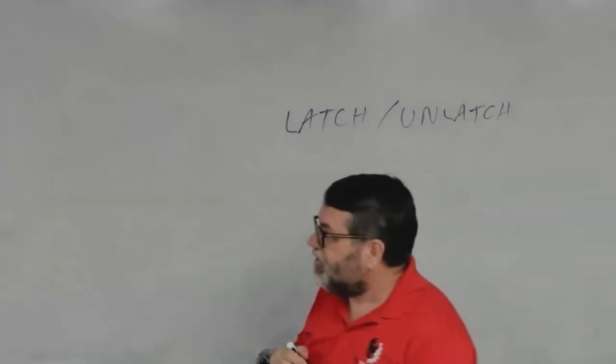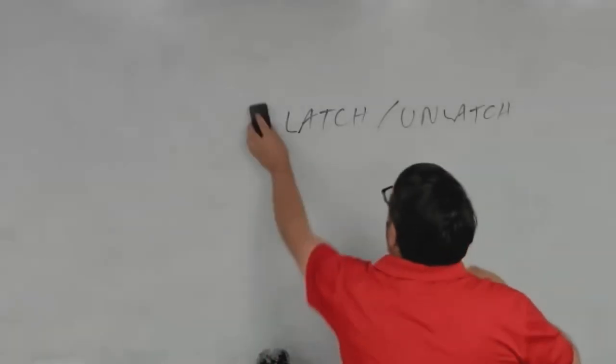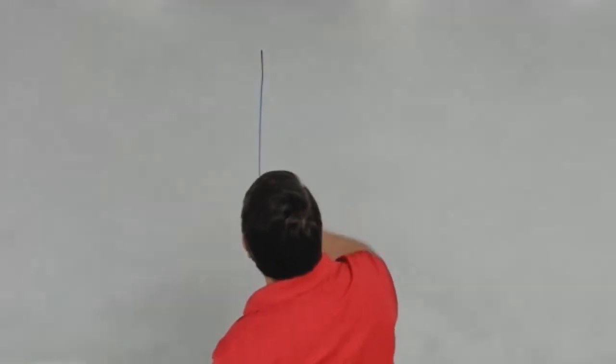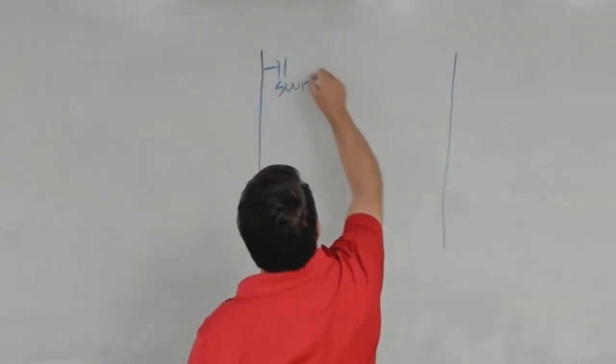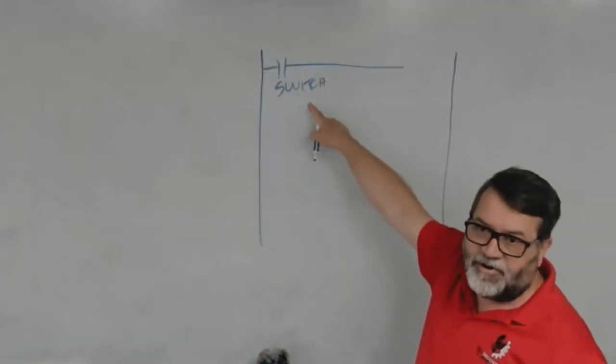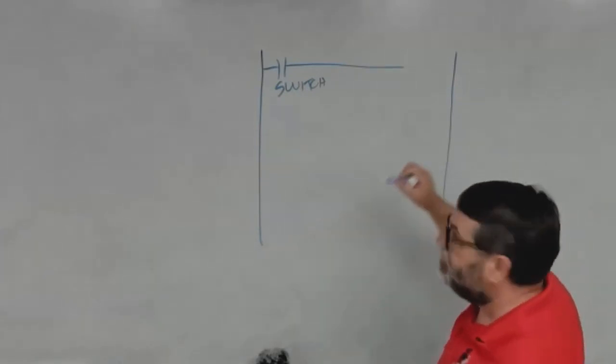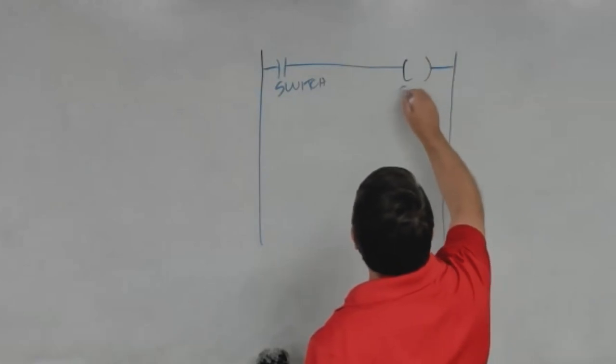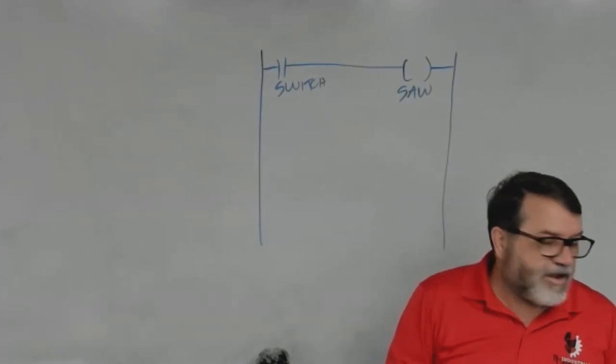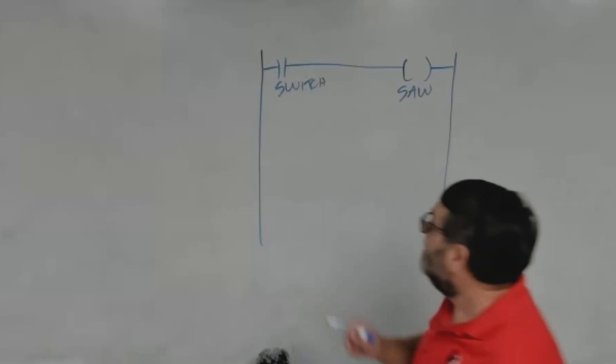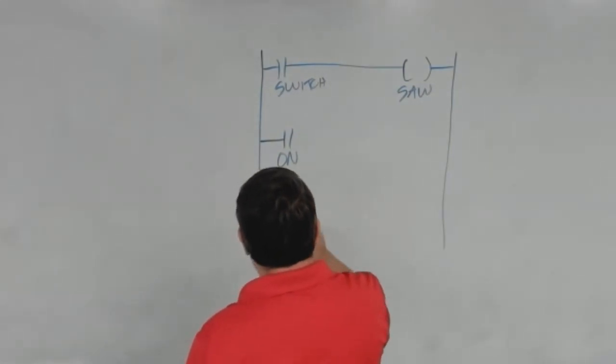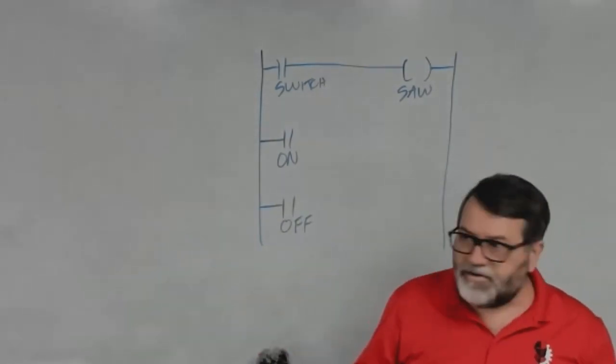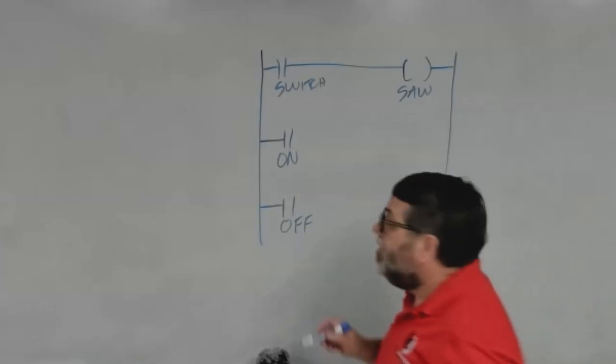Let's talk about latch-unlatch. On your software, you're going to see that we have three kinds of output coils. So on this first rung, I've just got a switch, an on-off switch, and that's how we've been doing things so far. We can connect that to an output. That's how we did it the first time. Now I'm going to do an air conditioning system.